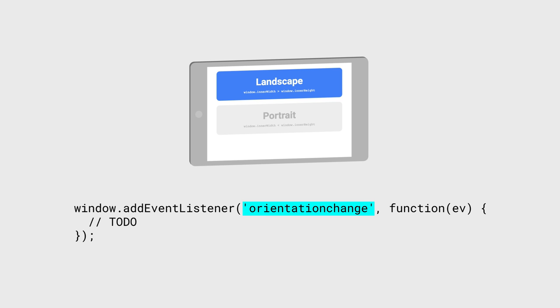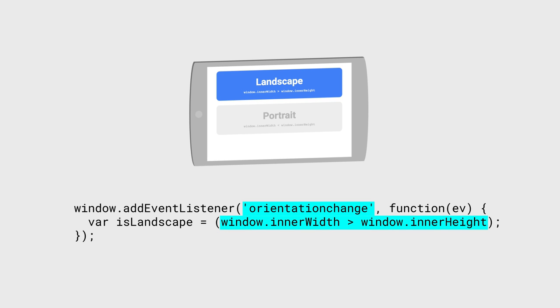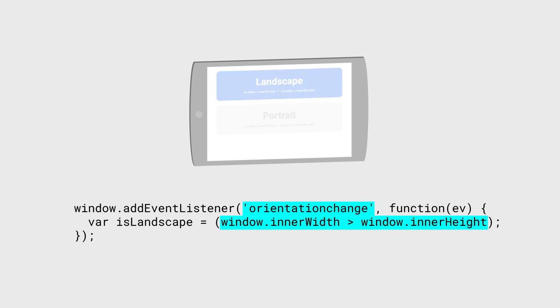To find out what orientation you're in, there's actually not really a standard API. It's actually best to just compare the width to the height. If it's greater, then your user's browser is in landscape mode.